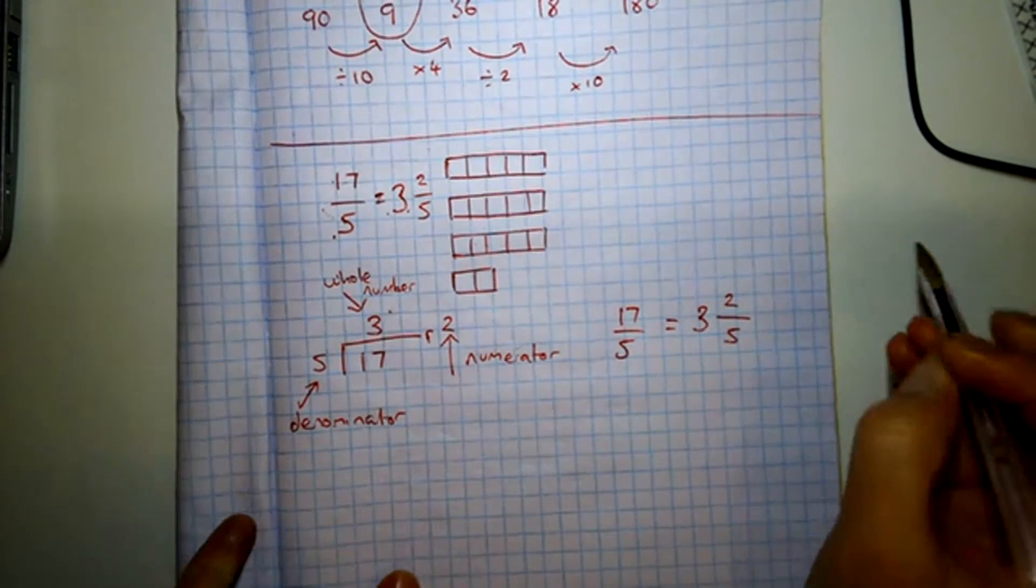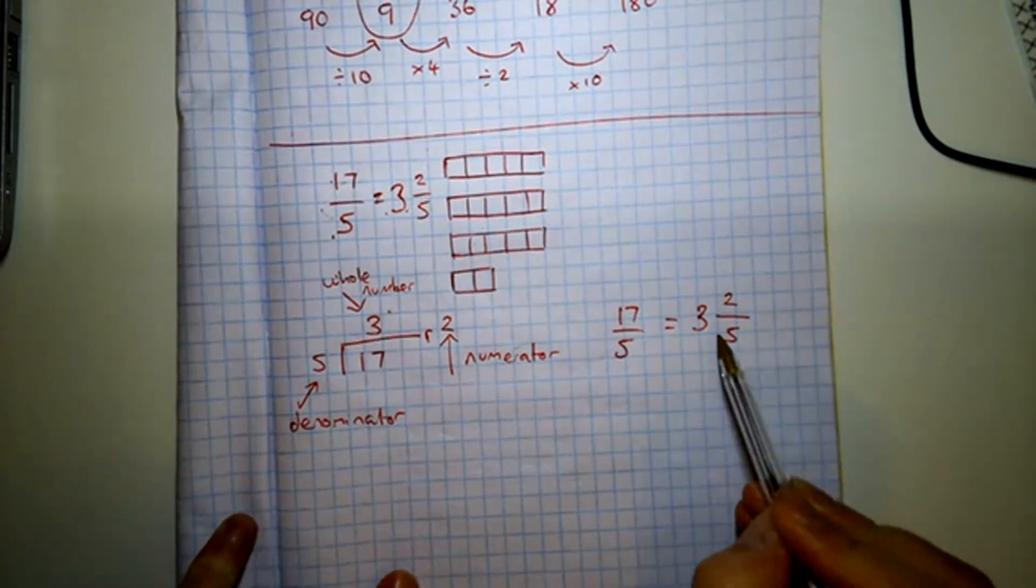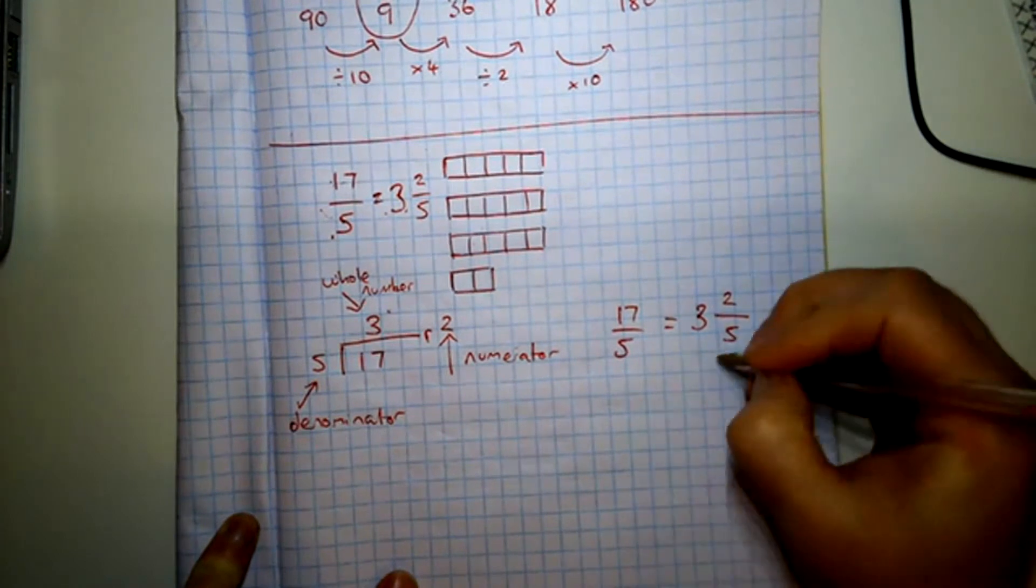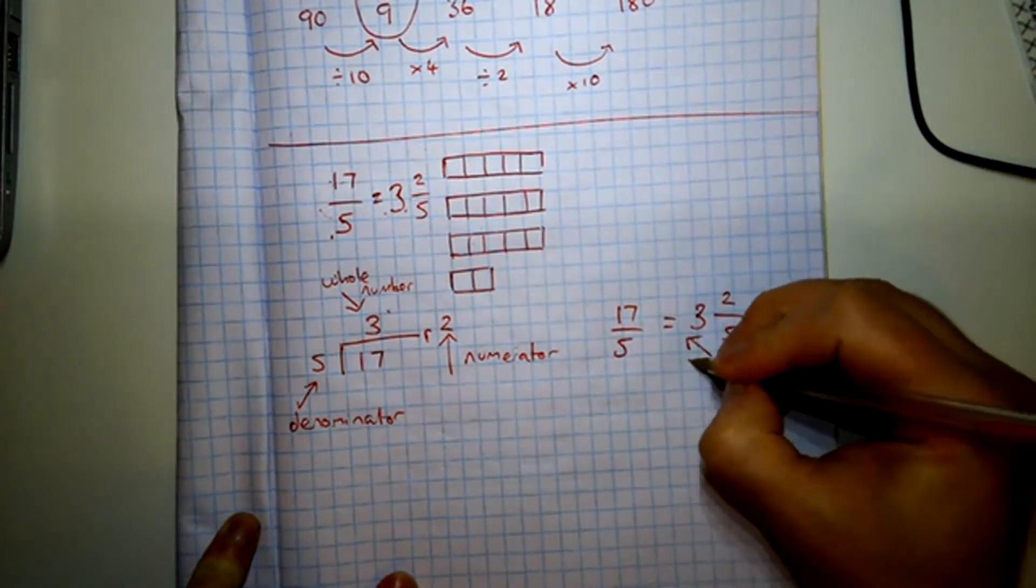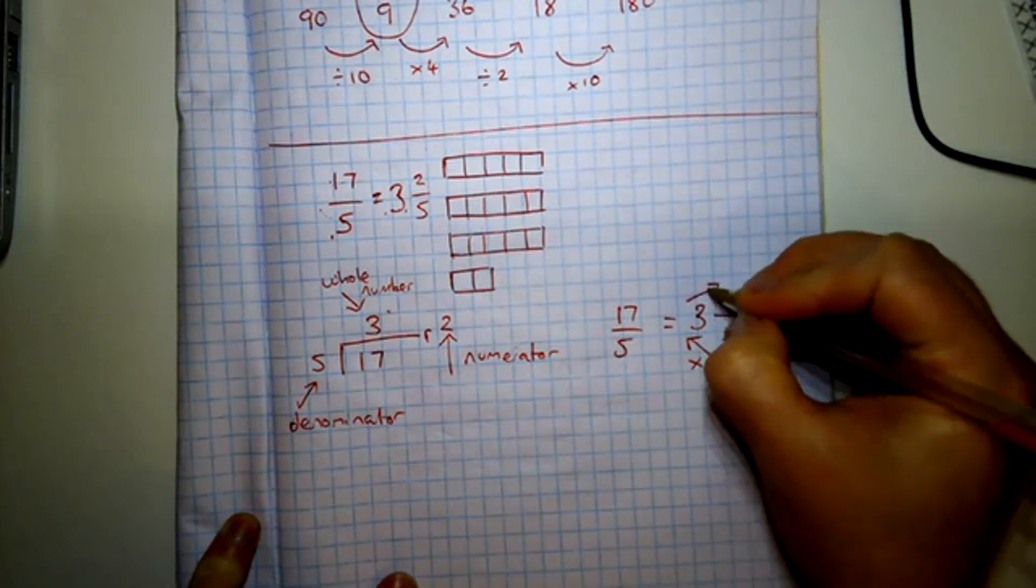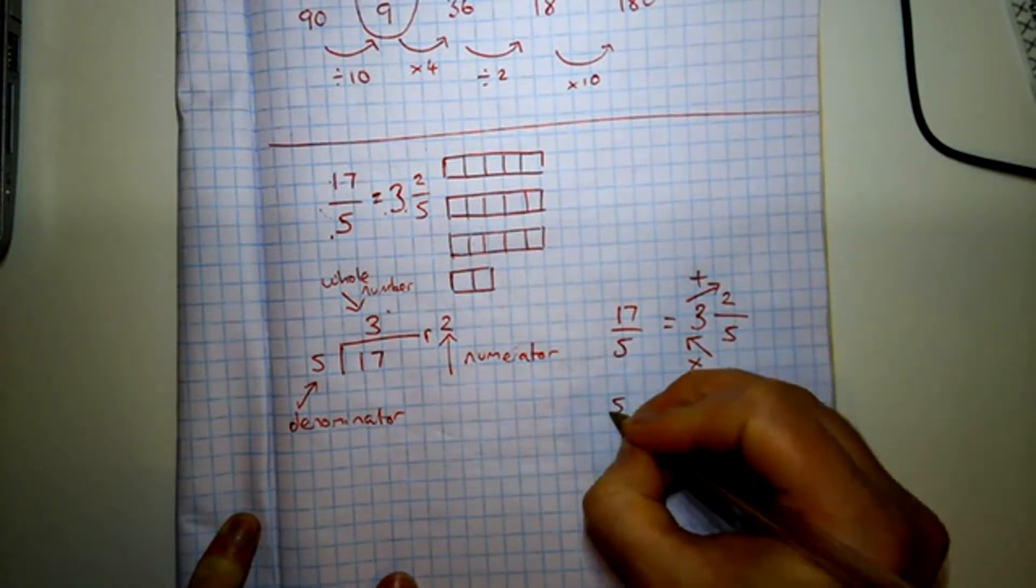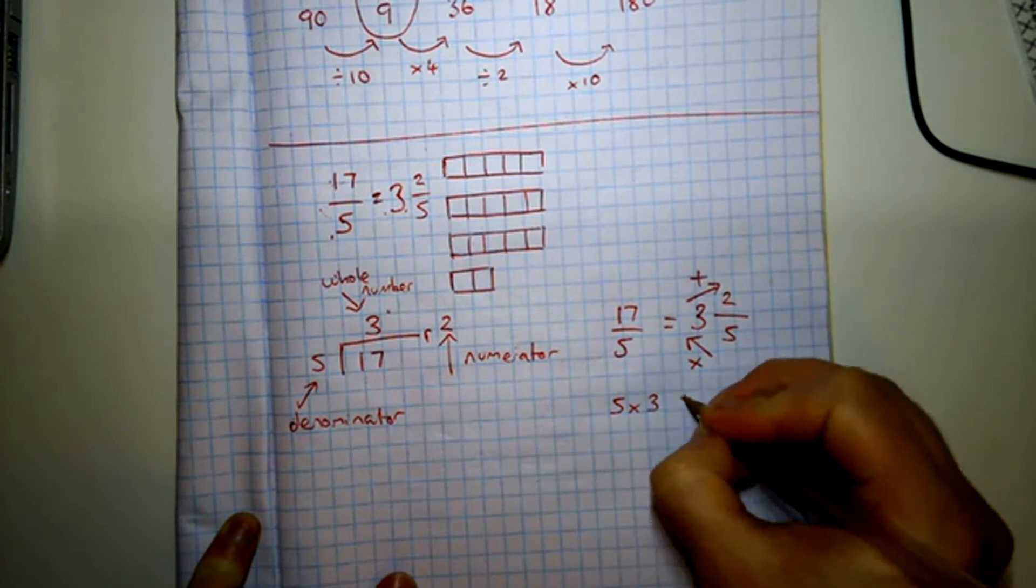And if I want to go backwards, if I want to turn a mixed number into an improper fraction, I have to multiply and then add, which means I'm going to be doing five times three plus two.